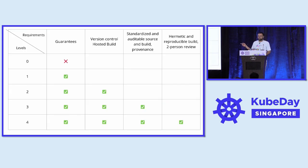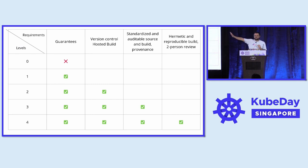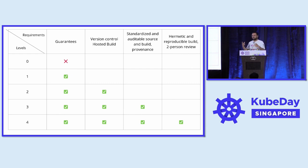This is an example of what different SLSA levels are for a build process. Because K-Pack focuses on the build, I'll highlight the build aspects of the SLSA levels. It's an incrementally growing number of best practices for how to architect your build environment. On the lowest level, you have an undocumented script doing a build. At the highest level, you have a repeatable hermetic parameterless build happening in a sufficiently isolated environment with two-person review. It allows people to incrementally build a better build process.